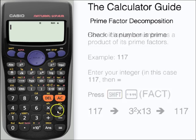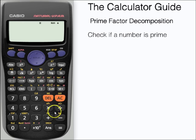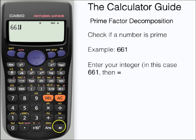We can also use this function to check if a number is prime. We are going to use the example of 661. Enter the number and press equals, then press shift and fact.